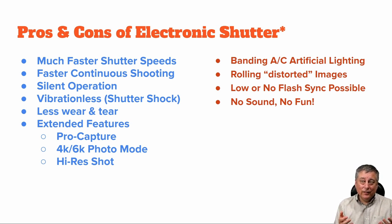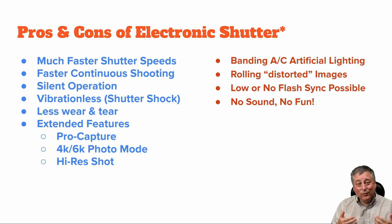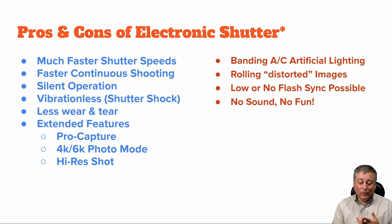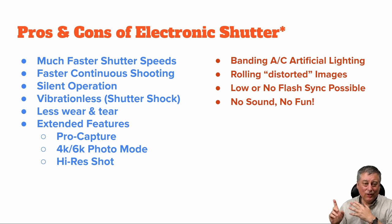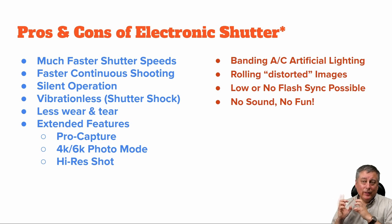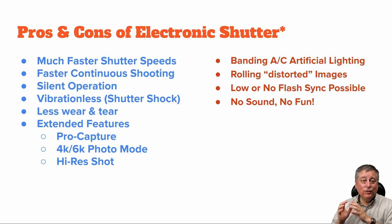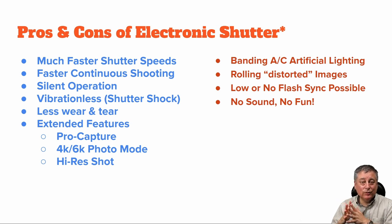Another nice thing is that manufacturers are coming up with innovative ways to use electronic shutter. We now have features like Pro Capture, 4K and 6K photo modes, and high-res shot mode — just off the top of my head, I'm sure there are many more. I think over time manufacturers will think of really interesting ways to use electronic shutter that you would never be able to do with a mechanical shutter.